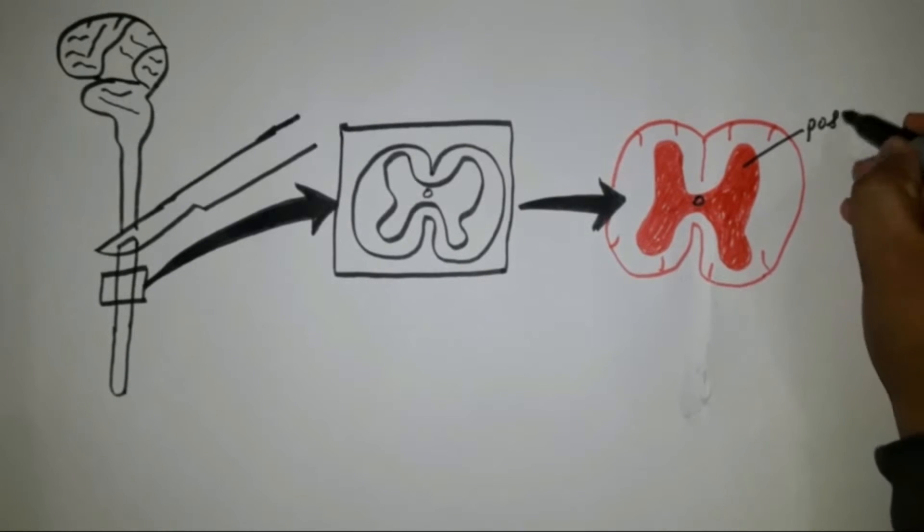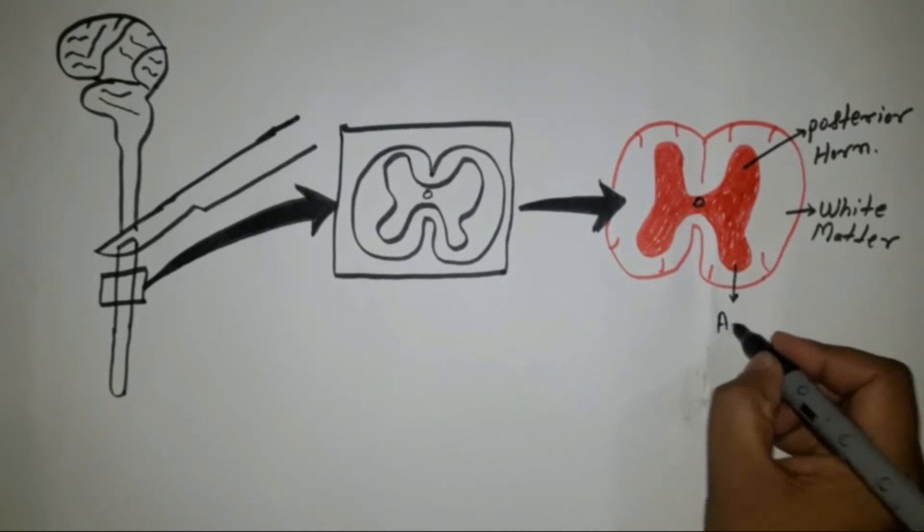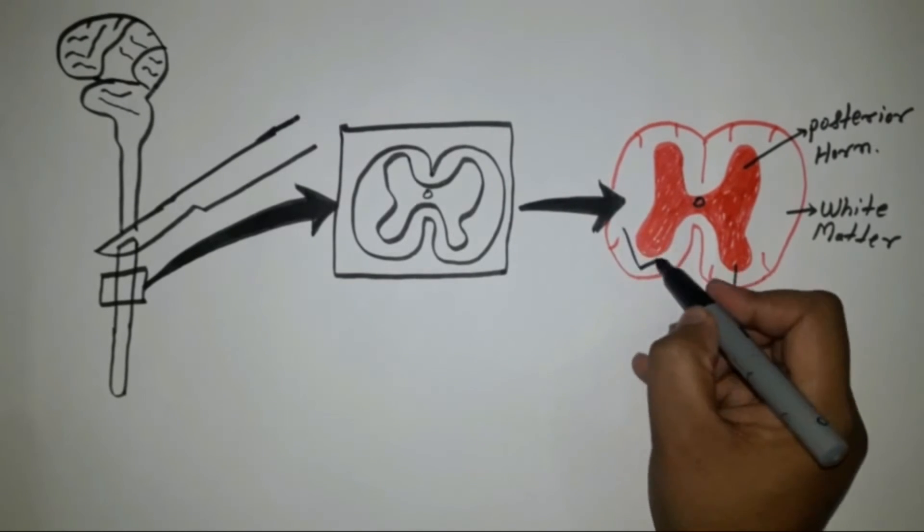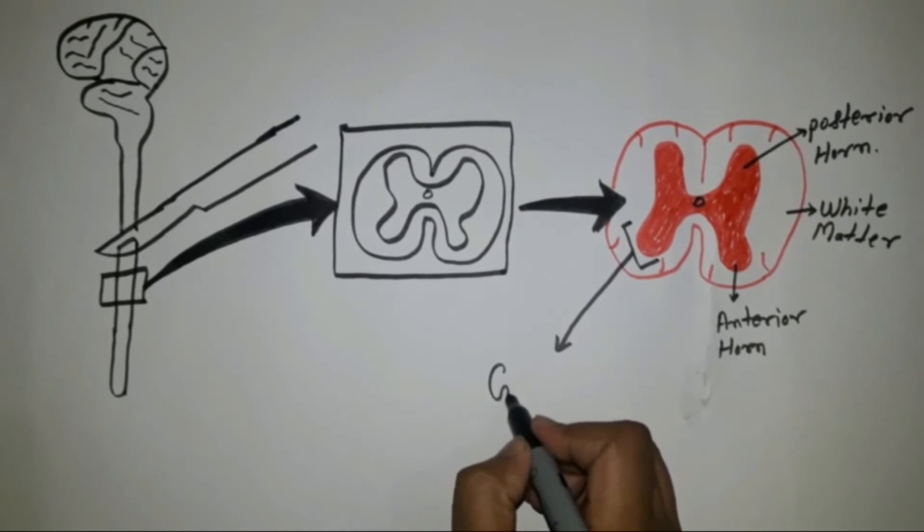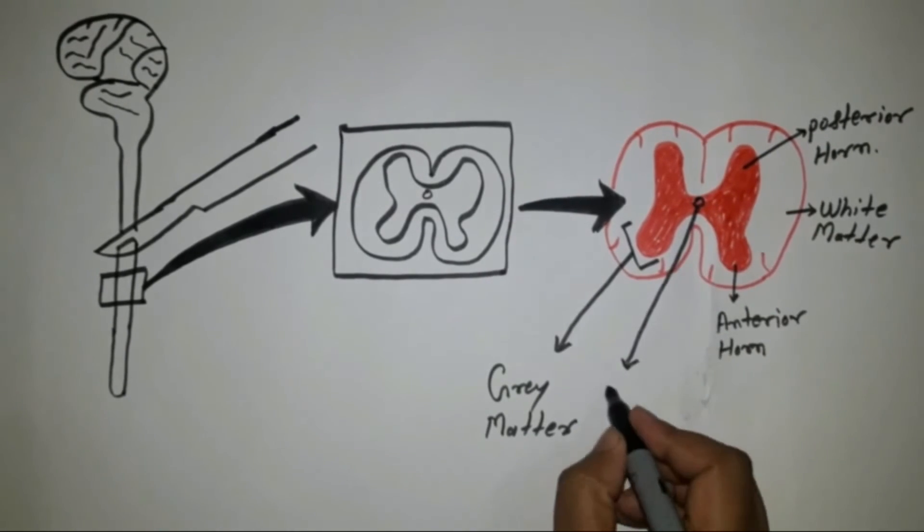White matter consists of axons of ascending and descending tracts, and divided into three segments: anterior segment, posterior segment, and lateral segment.